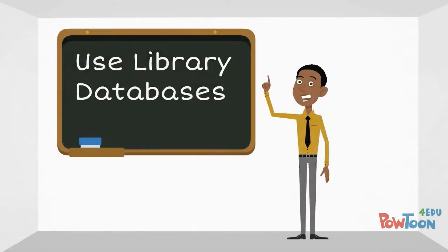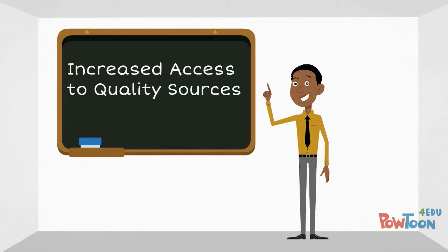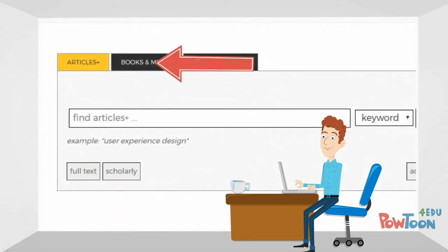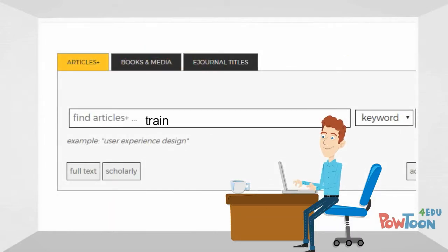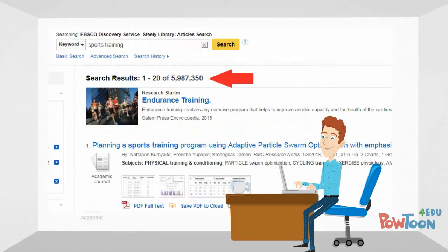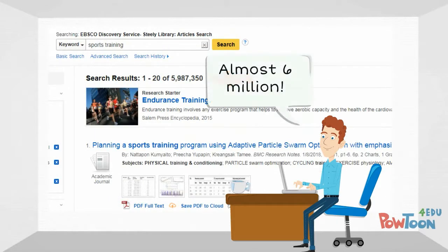A librarian told him that using library databases might provide him with more access to quality sources. He explained that one good option was to use the Articles Plus search on the main page of the library's website. The first few times that Mark tried, he got frustrated. Sometimes he would get very few results, but often he would get so many he would be overwhelmed.